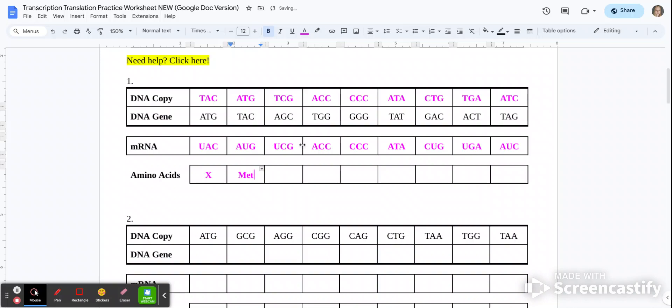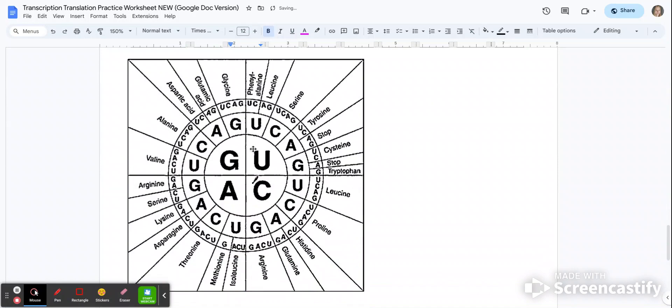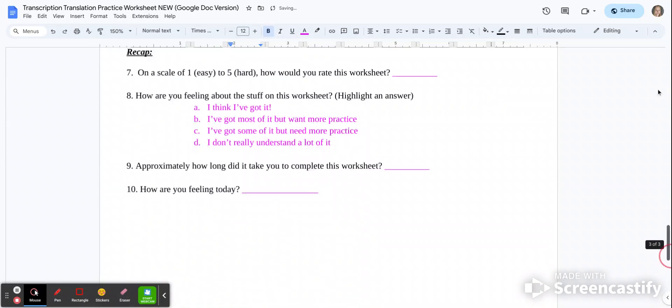You're going to continue going through. So the next one is UCG. So I can look U-C-G, that's serine. So I'm going to abbreviate S-E-R.